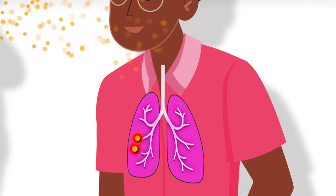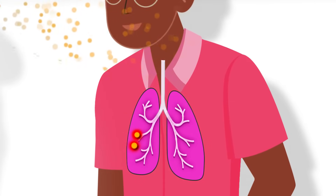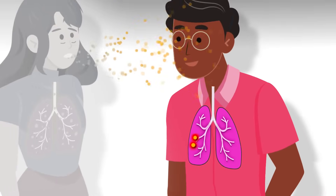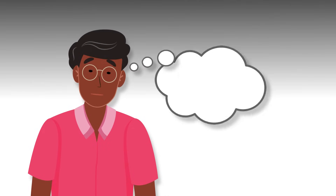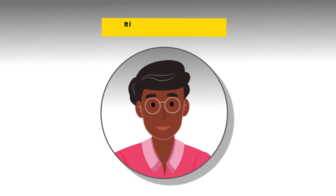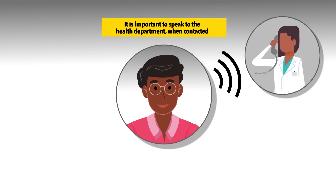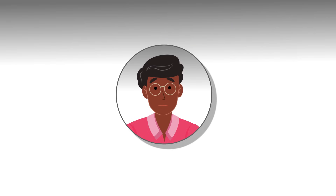Without treatment, someone can go on to develop TB disease, like Arun, and spread TB to others. It is possible for someone to spread TB before they know that they are sick or are diagnosed. This is why it's important for Arun to speak with the health department and share information about who he has spent time with while he was sick.